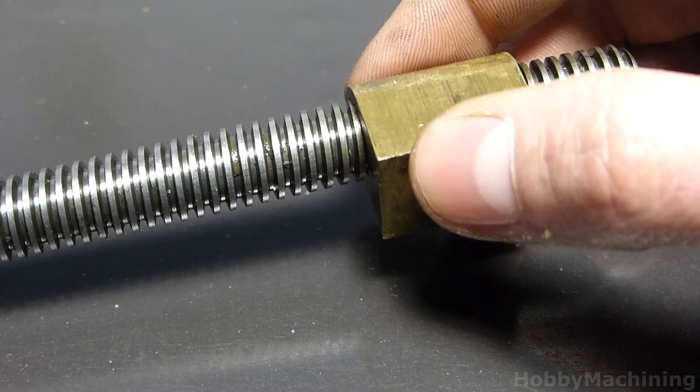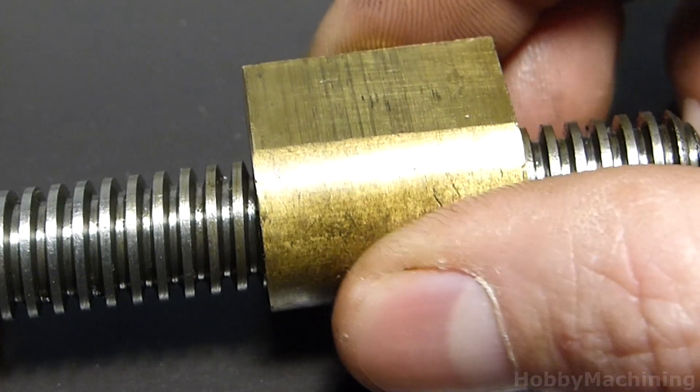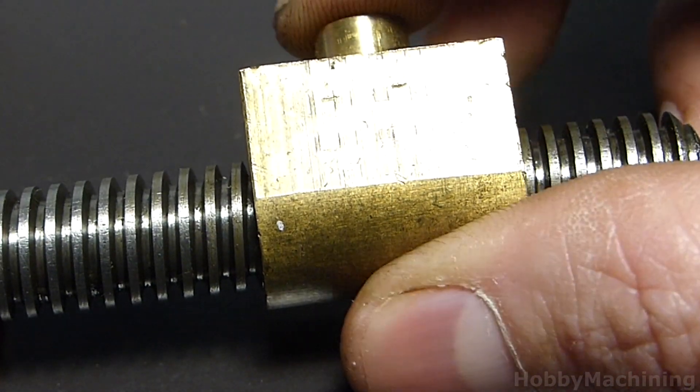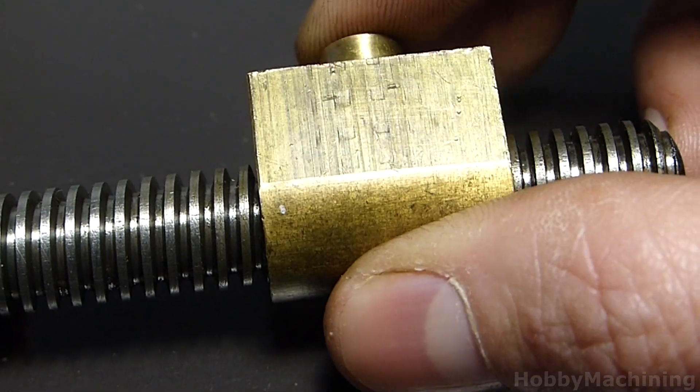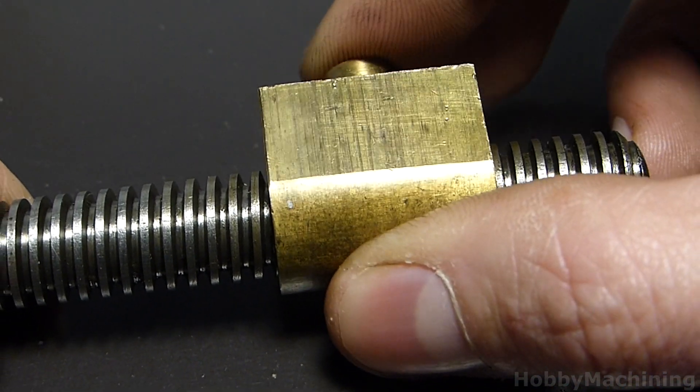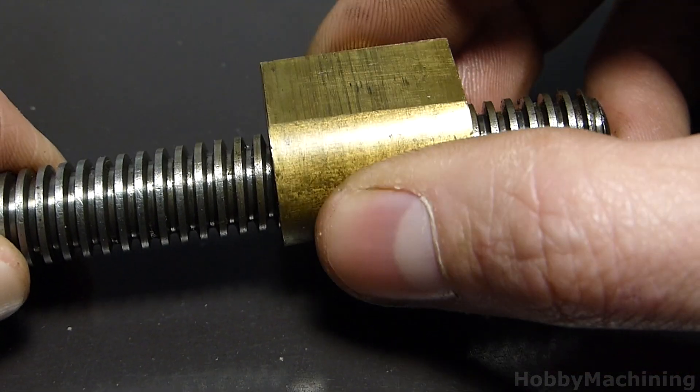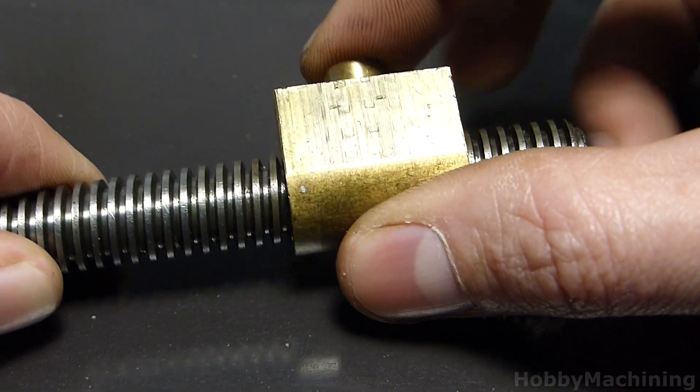For example, this is a feed screw. If we look very closely, we can wiggle this nut right on the feed screw. That's because they are not perfectly engaged. There is a little bit of room between the threads.